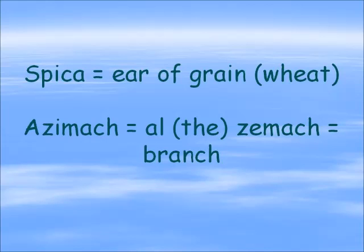The palm frond in the right hand kind of looks forward a bit to Sukkot. The brightest star in the constellation Virgo is in that sheaf of wheat, and it's called Spica, which means an ear of grain, a piece of wheat. So that's interesting concerning the role of the virgin and his mother, Miriam, Mary. In Arabic, this star is called Azimach — from the definite article al, meaning the, and semach, which means branch, also in Hebrew — a messianic reference.